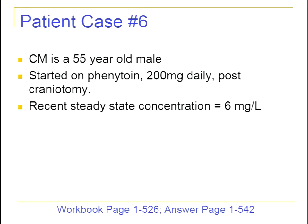Now we'll talk about non-linear pharmacokinetics. Case six on page 526: CM is a 55-year-old male started on phenytoin 200 mg/day post-craniotomy, and the steady-state concentration is 6 mg/L. If CM's KM is calculated to be 5 mg/L, what will most likely occur if we double the dose to 400 mg/day?